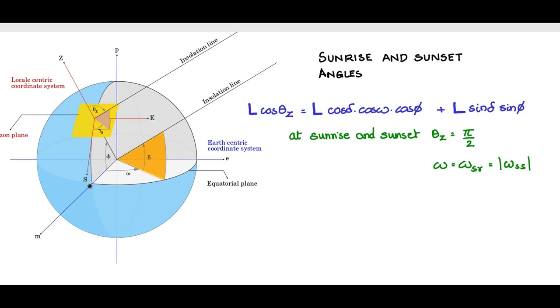And sunset is to the west of the meridional axis. ωss is considered negative, but modulus of the sunset angle and the hour angle at sunrise will be the same.